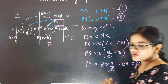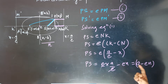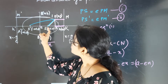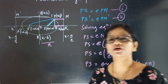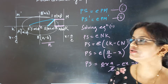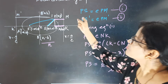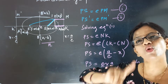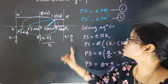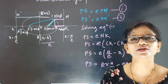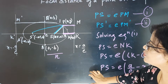Today's class we are going to find the focal distance. The distance of the focus from the point P is called the focal distance. There are two foci: one focus is S and another focus is S dash.